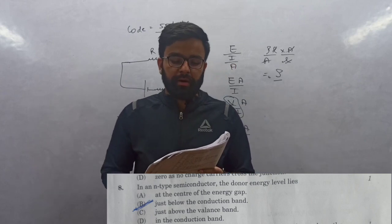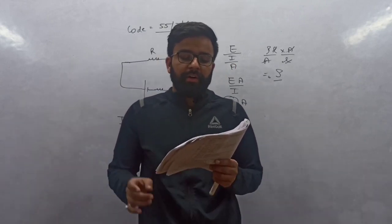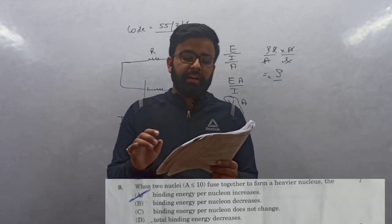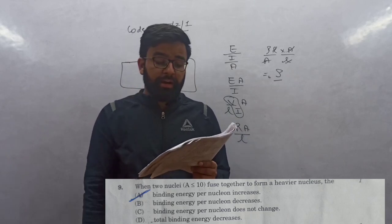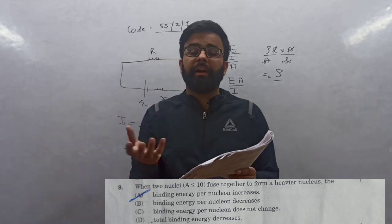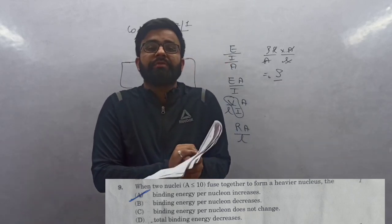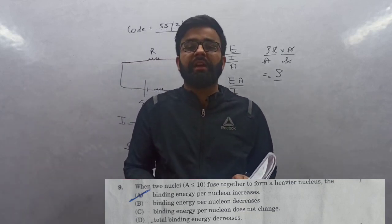Question 9: When two nuclei, A less than or equal to 10, nuclear fusion is happening. When fusion happens, binding energy increases because nucleus becomes more stable. Answer is binding energy per nucleon increases.